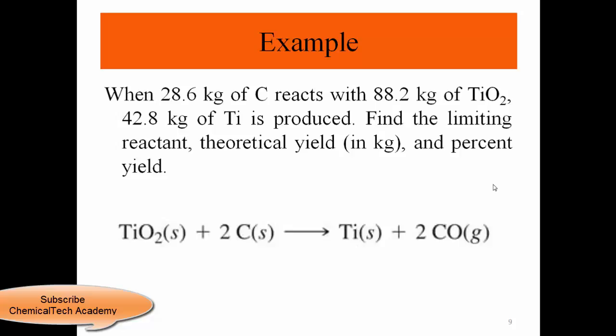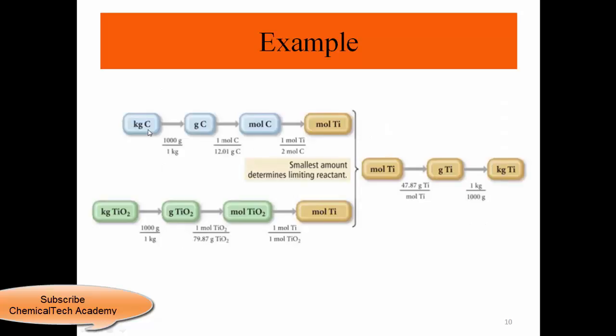Next example: when 28.6 kilograms of C reacts with 88.2 kilograms of titanium dioxide, 42.8 kilograms of titanium is produced. Find the limiting reactant, theoretical yield, and percent yield. The reaction is: TiO₂ + 2C → Ti + 2CO. We have kilograms of C and TiO₂, so we must first convert to grams, then to moles, and then compare to find the limiting reactant.